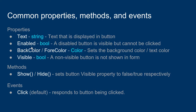The enabled property is a Boolean property. When the enabled property is true, the button is usable — you can click on it and it works like you would expect. When the enabled property is set to false, you can see the button, but it will be kind of grayed out, and if you try to click on it, you can't click on it anymore.